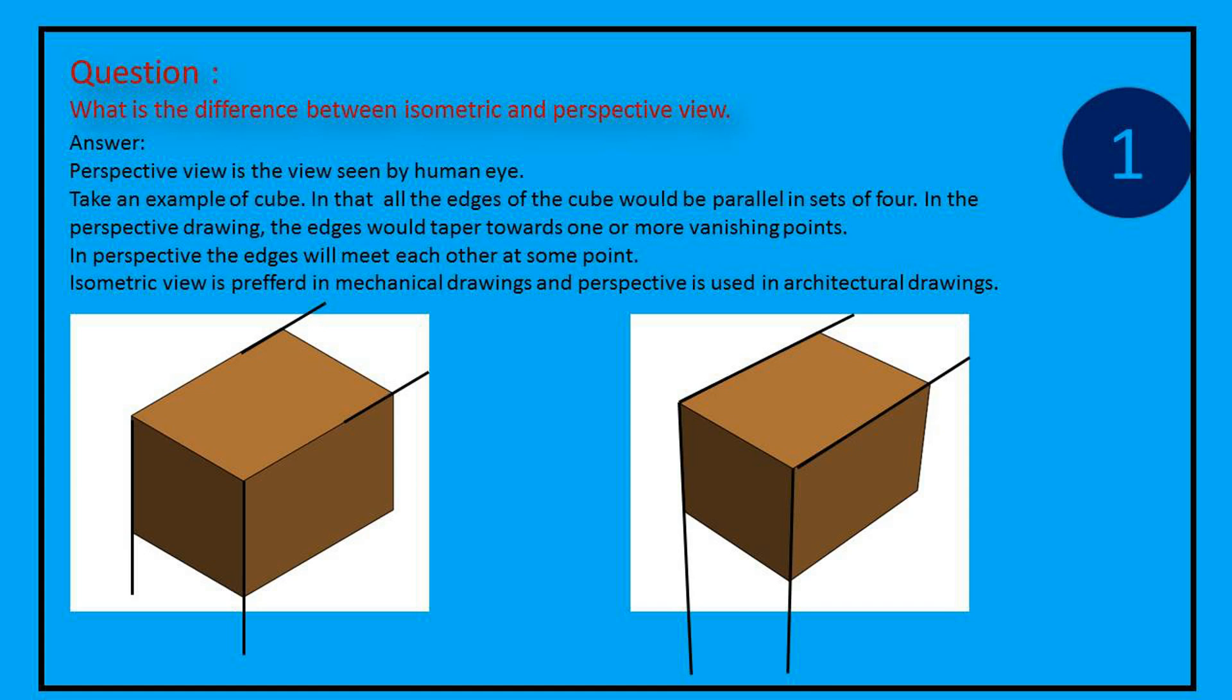In the perspective drawing, the edges would taper towards one or more vanishing points. In perspective the edges will meet each other at some point in space. Isometric view is preferred in mechanical drawings and perspective is used in architectural drawings.